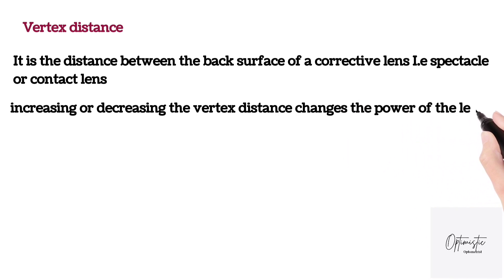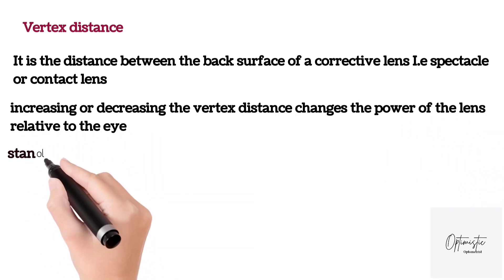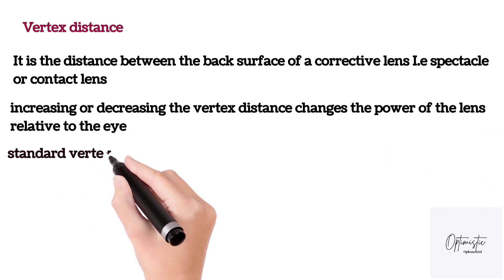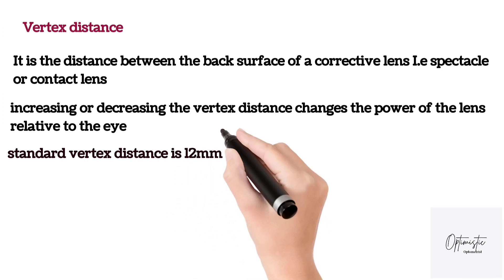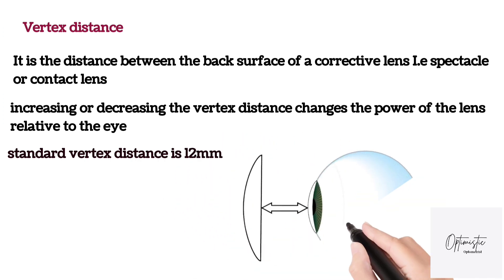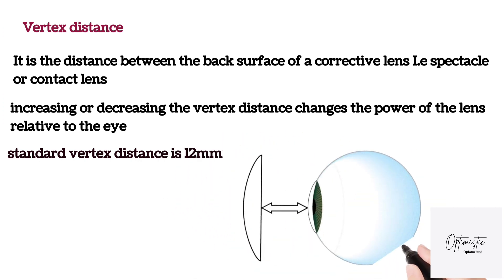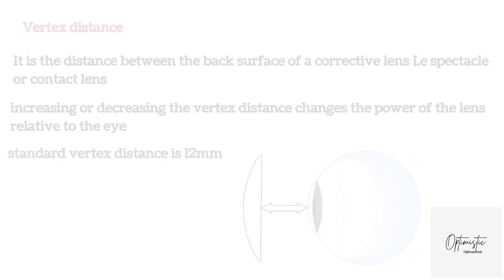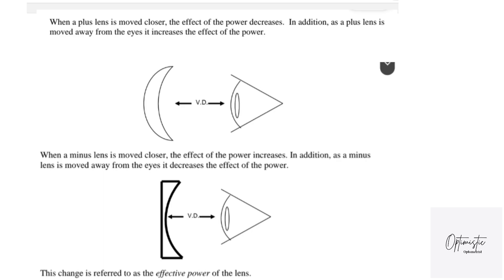Increasing or decreasing the vertex distance can change the power of the lens relative to the eye. The standard vertex distance is 12 mm. Vertex distance is really important while converting between contact lens and glasses prescription, and it becomes significant when the glass prescription is more than plus or minus 4 diopters.